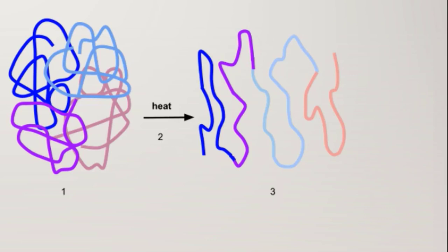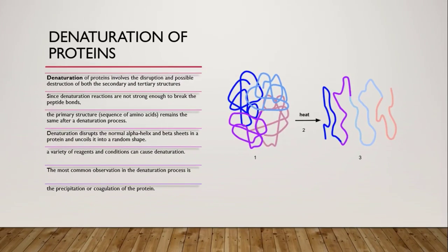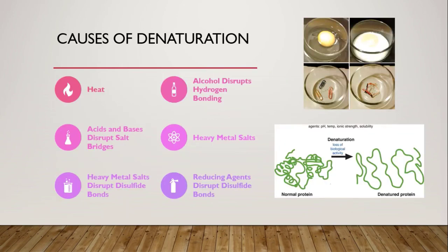Any denaturation process does not affect the primary structure of proteins, which means the sequence and number of amino acids in the polypeptide chain remains the same. The secondary structure — the alpha helix and beta-pleated sheets — is uncoiled after denaturation, and we get a random shape. There are a variety of agents and conditions that can cause denaturation.